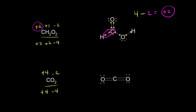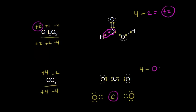Looking at the dot structure for CO₂ and putting in the bonding electrons: oxygen is more electronegative than carbon, so each oxygen steals the electrons in those bonds. All four electrons in each double bond go to the respective oxygen, leaving carbon with zero electrons around it. So four minus zero gives an oxidation state of plus four for carbon, just as we predicted.